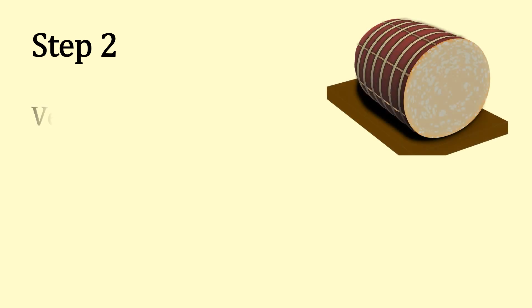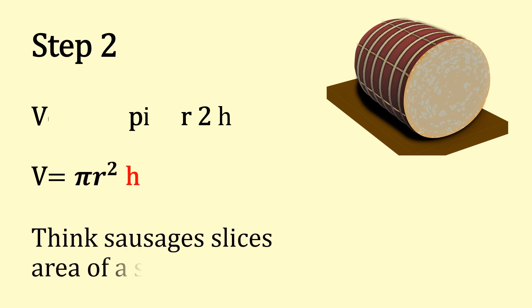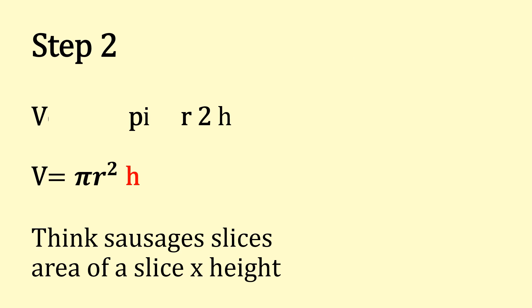Step 2. Venison pies are too horrible. V equals πr² times h. So think about sausage slices. The area of the slice times the height of the cylinder.